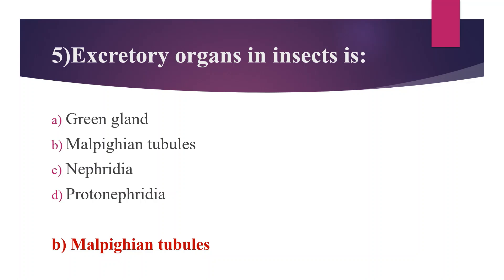Green gland is the excretory organ of crayfish. Nephridia is the excretory organ of annelids such as earthworms and leeches. Protonephridia is the excretory organ of platyhelminthes, also known as flatworms.